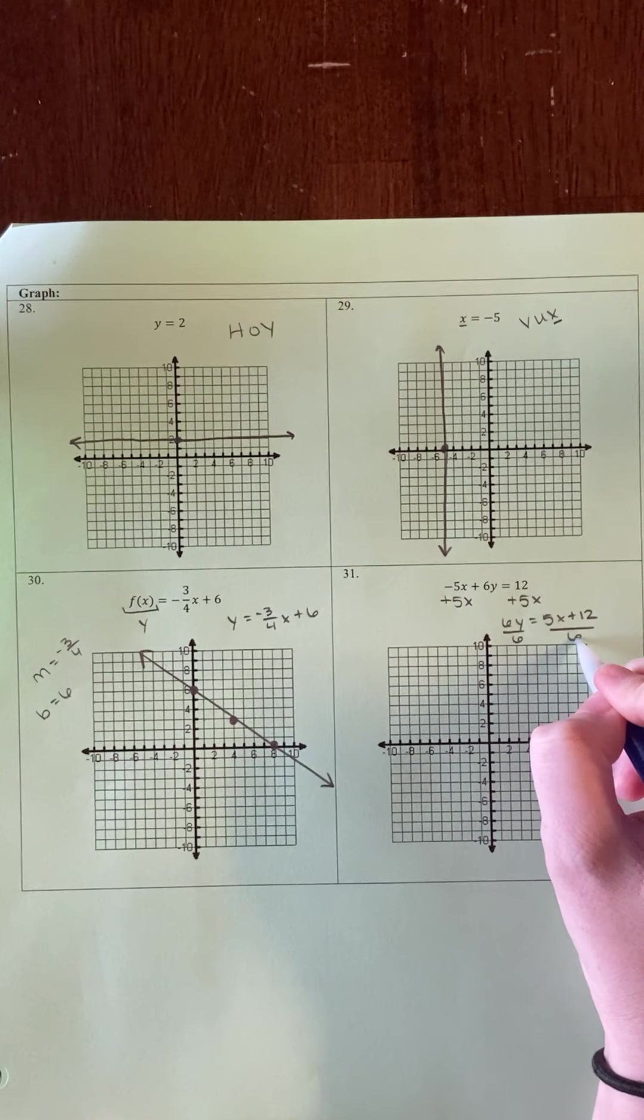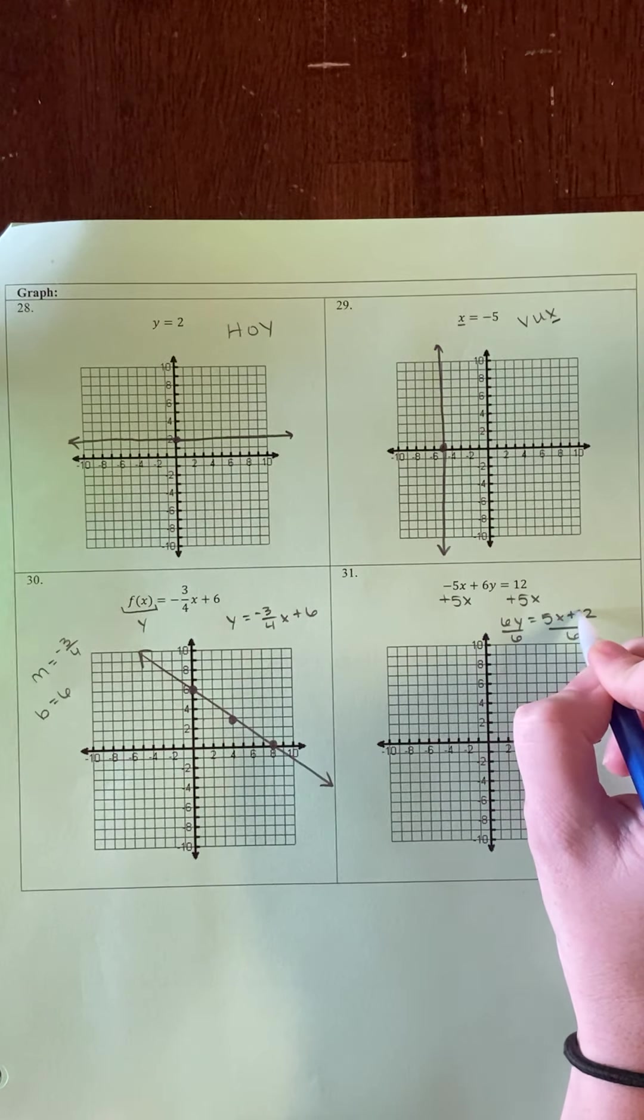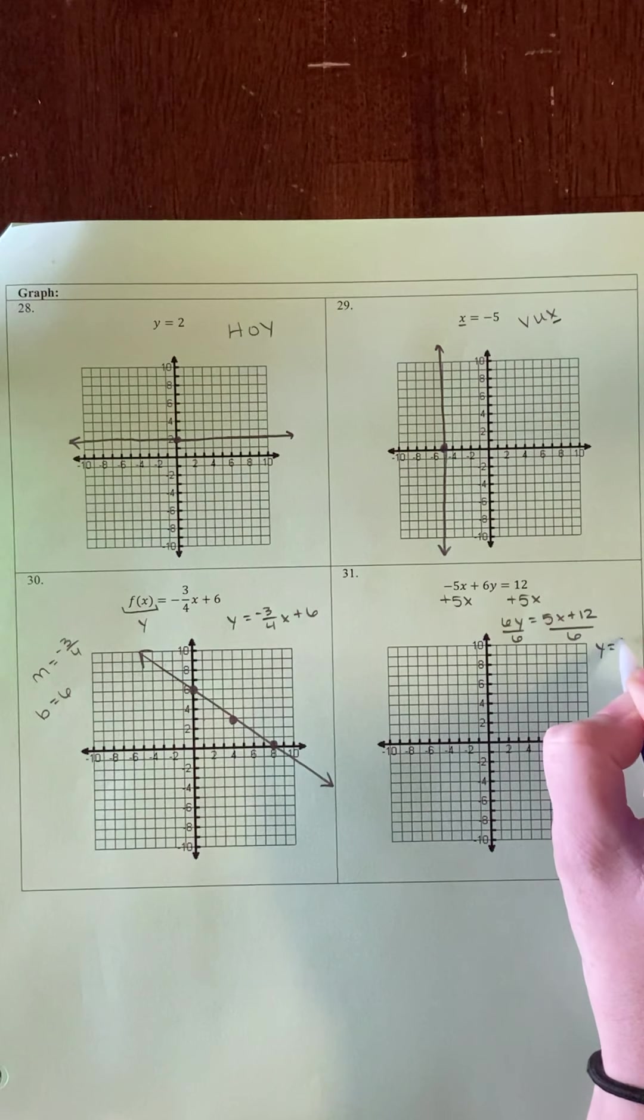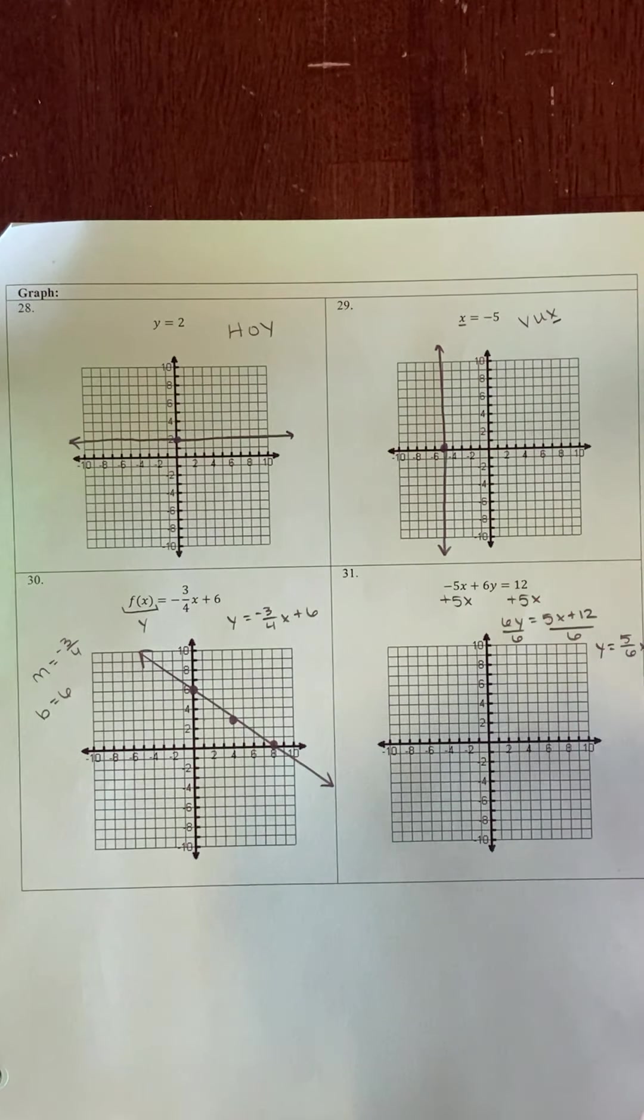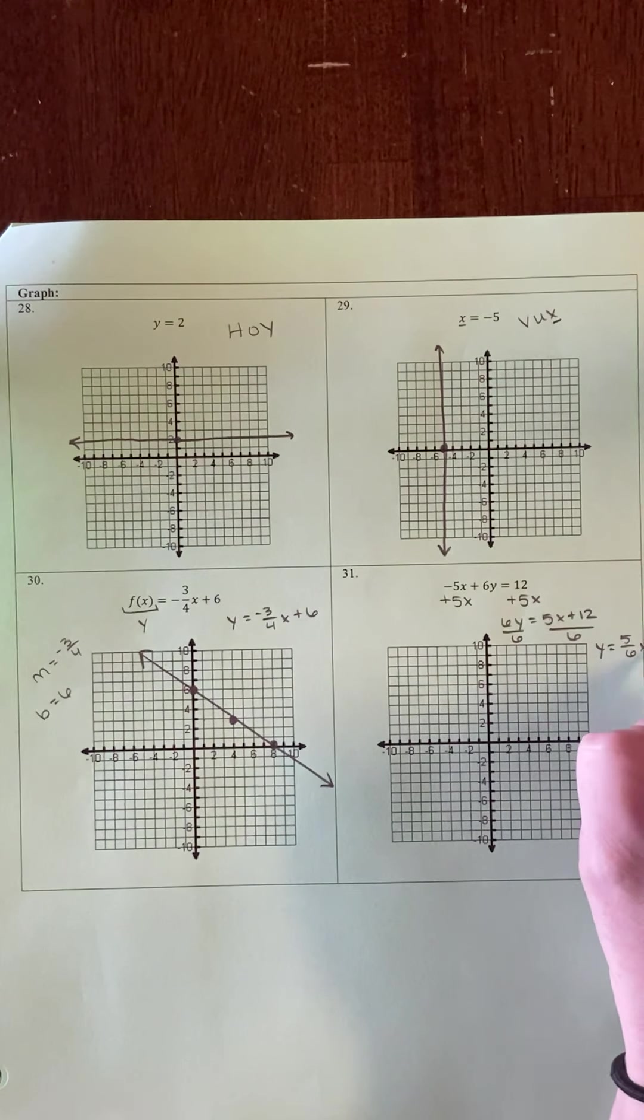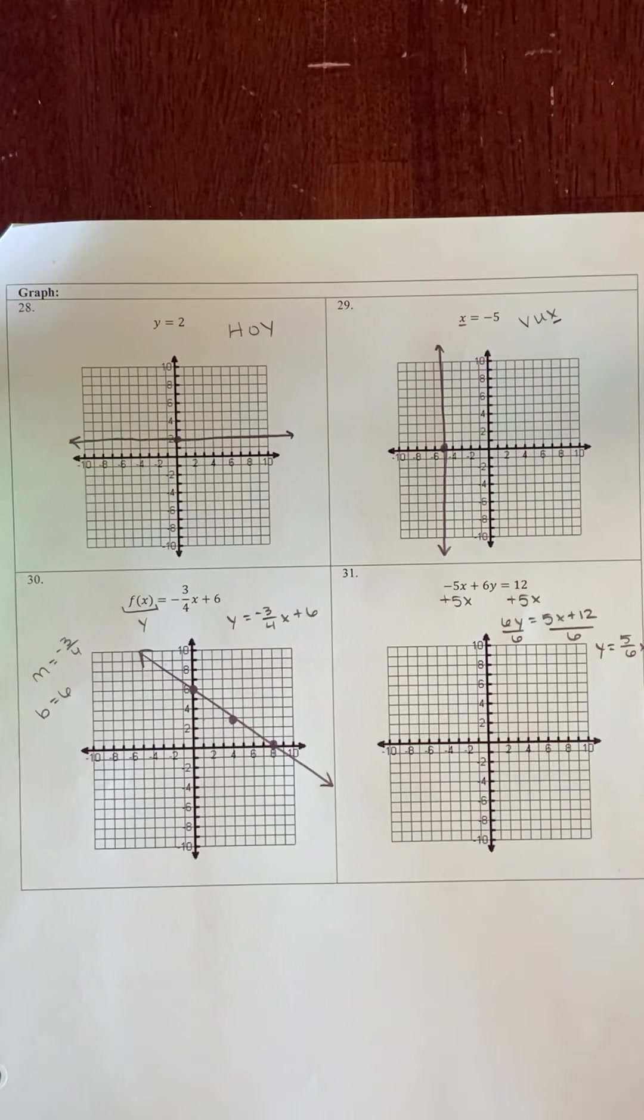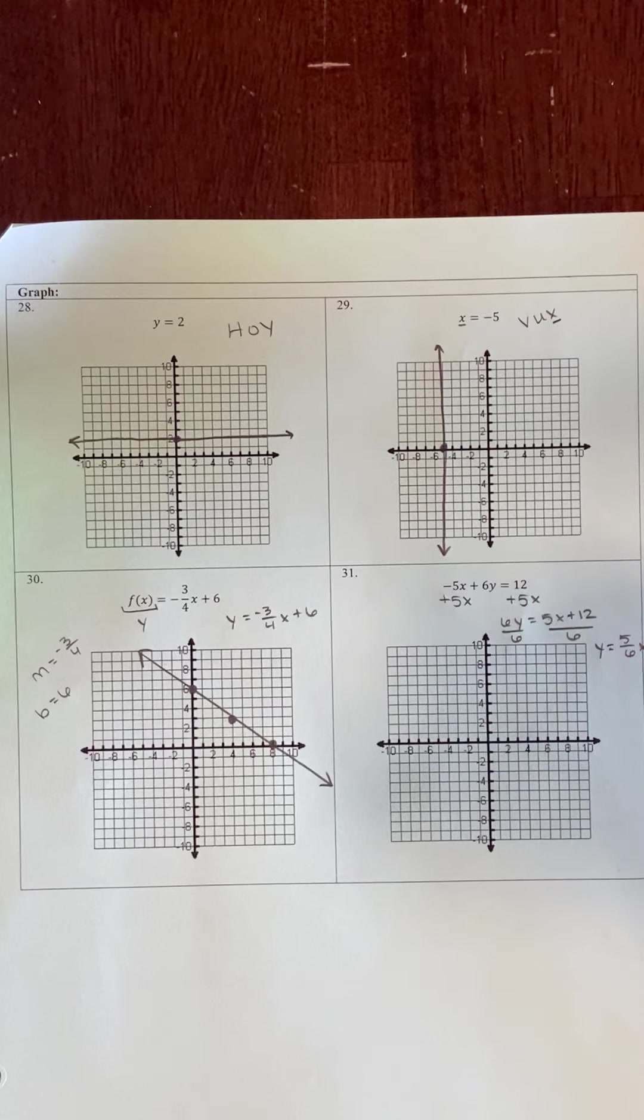Remember, when I divide by 6, I'm dividing each piece on top by 6. So 5 divided by 6 is 5/6. 12 divided by 6 is 2. I've rewritten this equation from standard form to slope-intercept form, and now I can graph it.